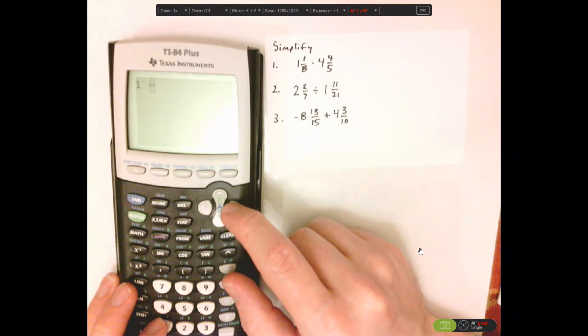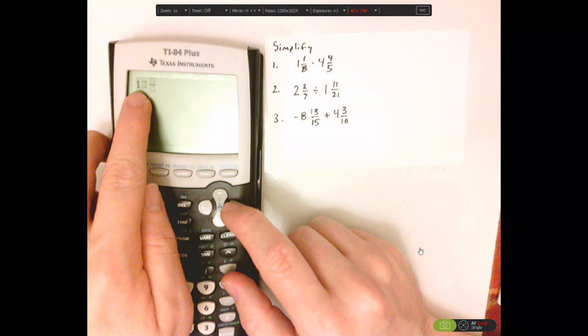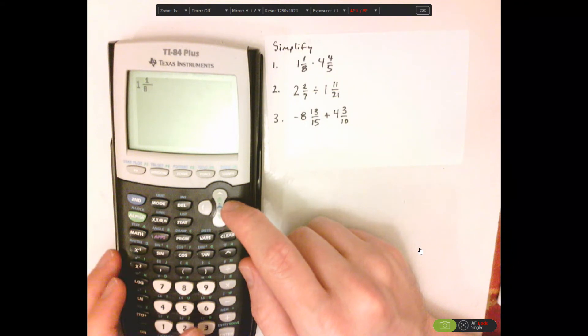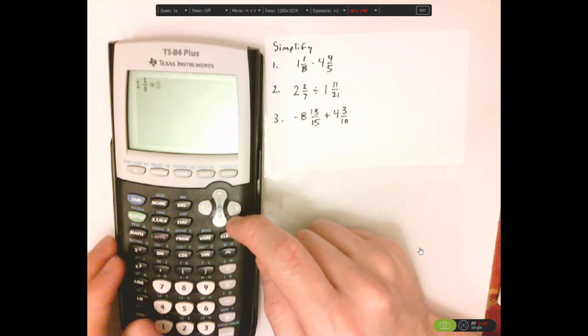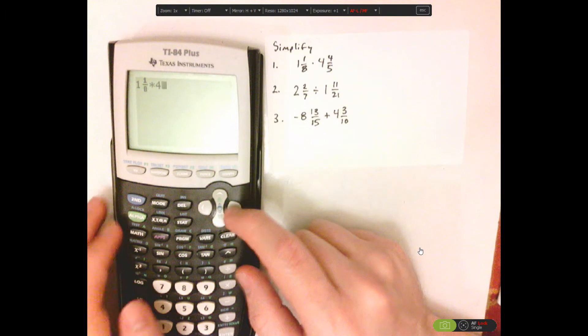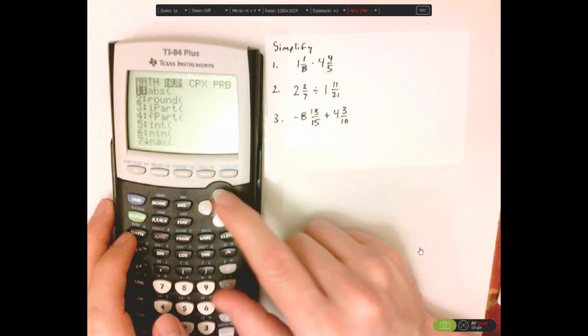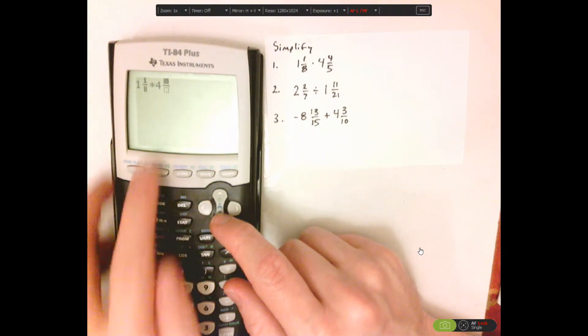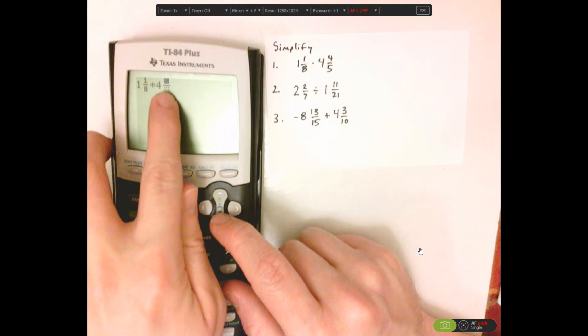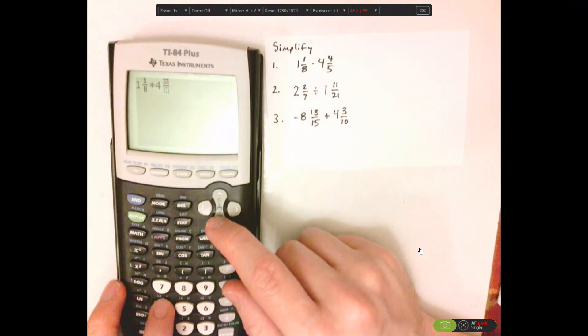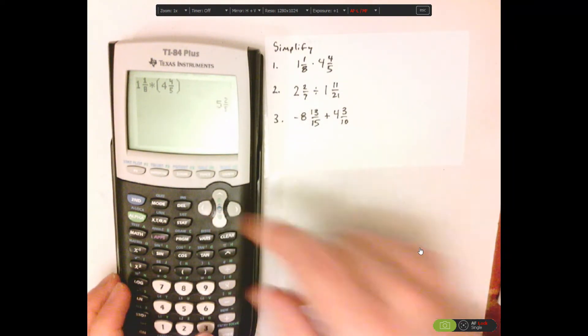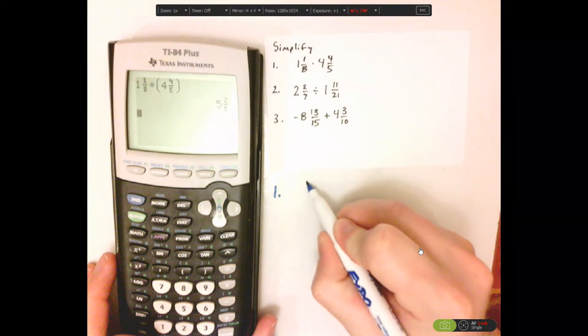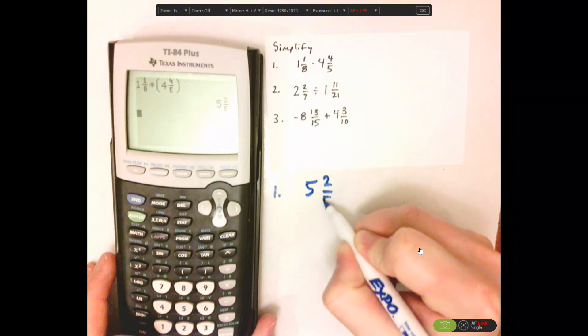Now, just use the arrow keys to navigate. So I just push 1, push over, down, 8. So times, I'm going to push 4, math, again going back to that. See, now it just filled that in for the unit, so now I can just type in the rest. So 4 fifths, there we go. So for number 1, that's 5 and 2 fifths.